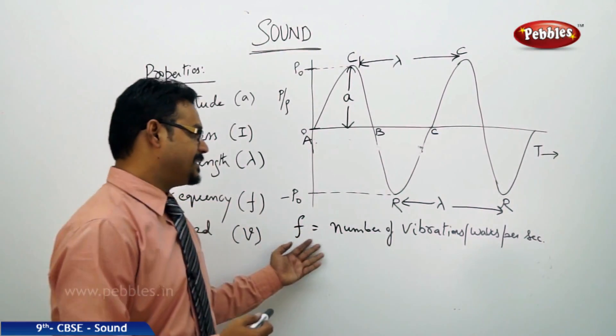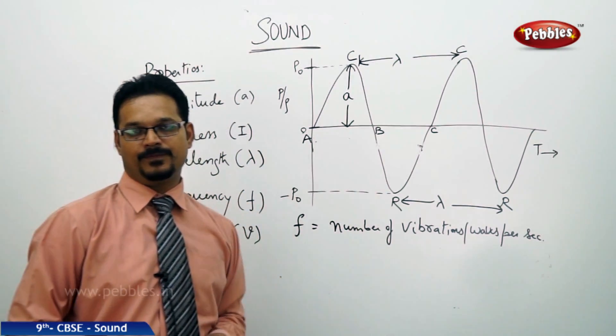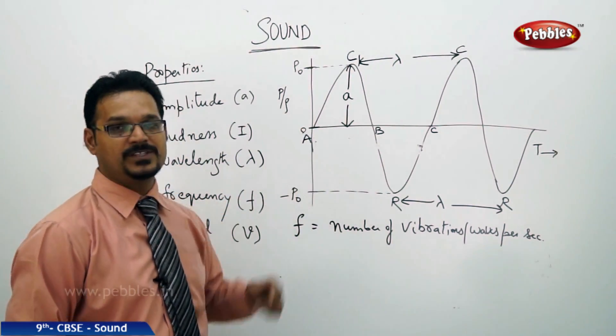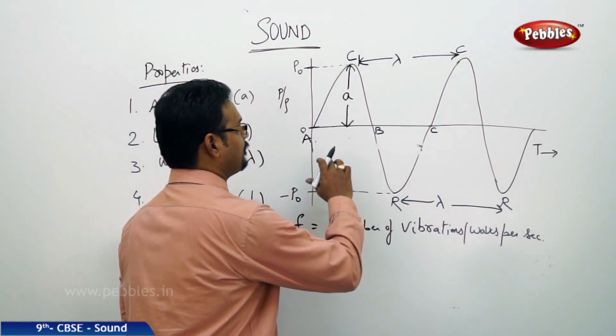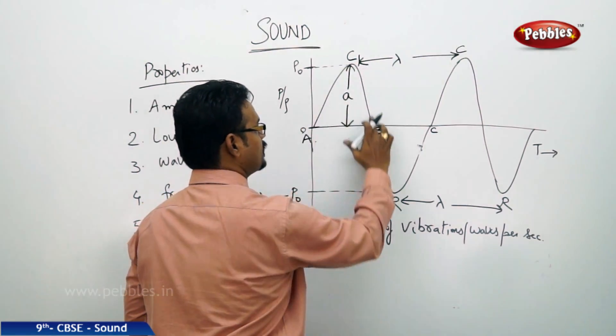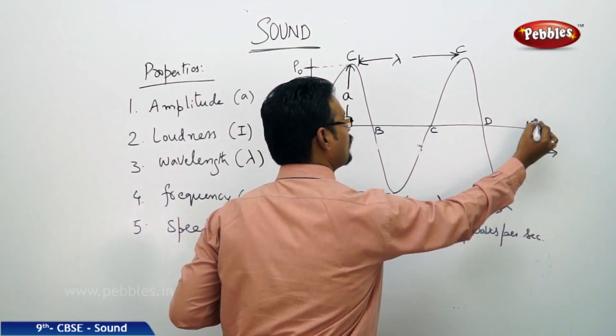So, the frequency is number of vibrations or waves per second. Now, see this diagram once again. Suppose, if I mention that this is one complete wave, C-D-E is one more complete wave.